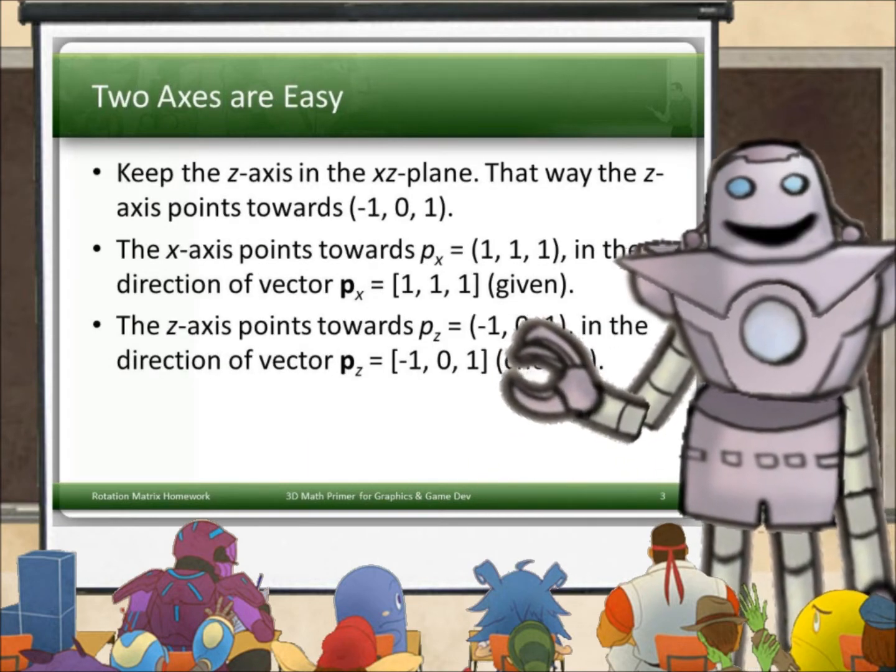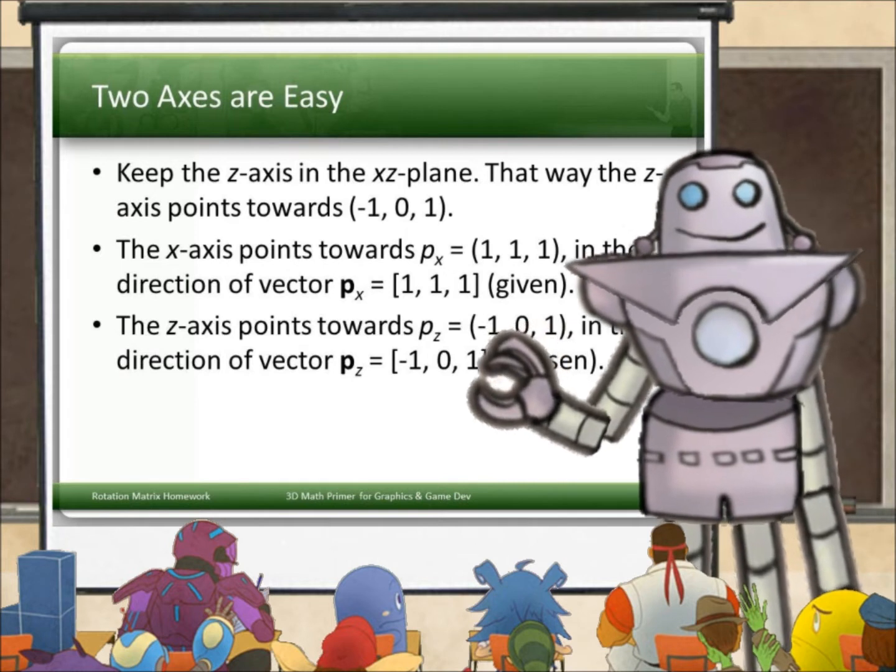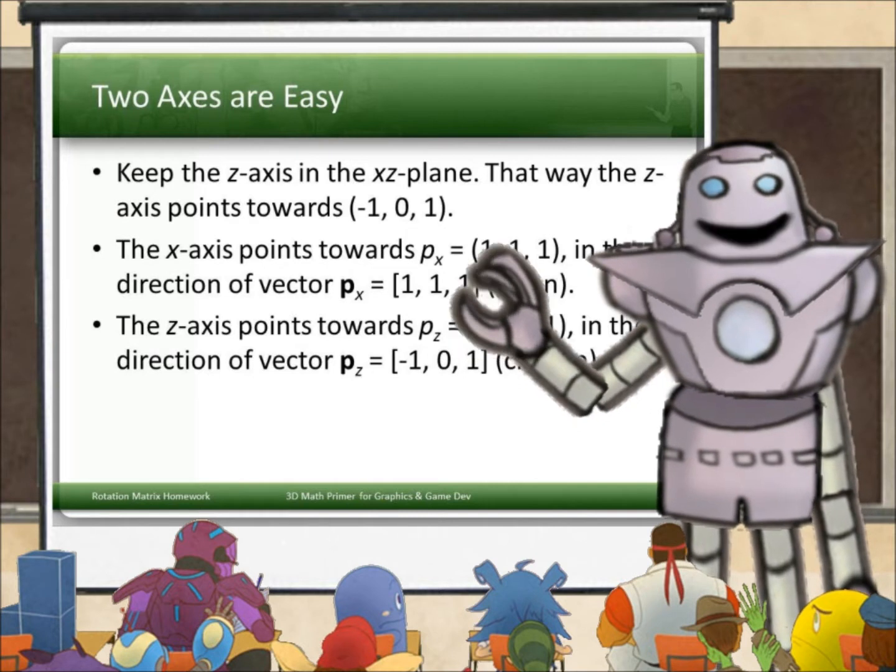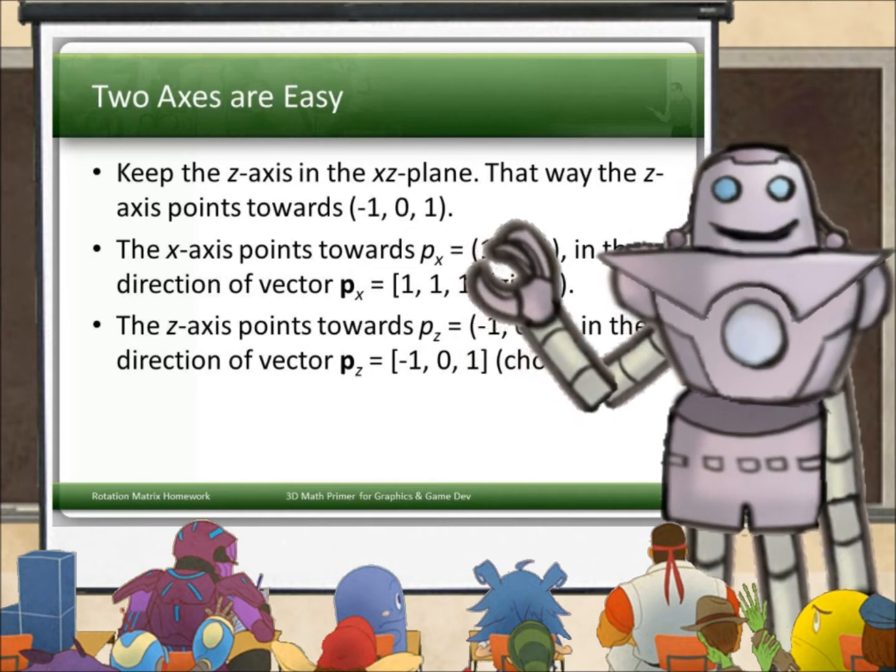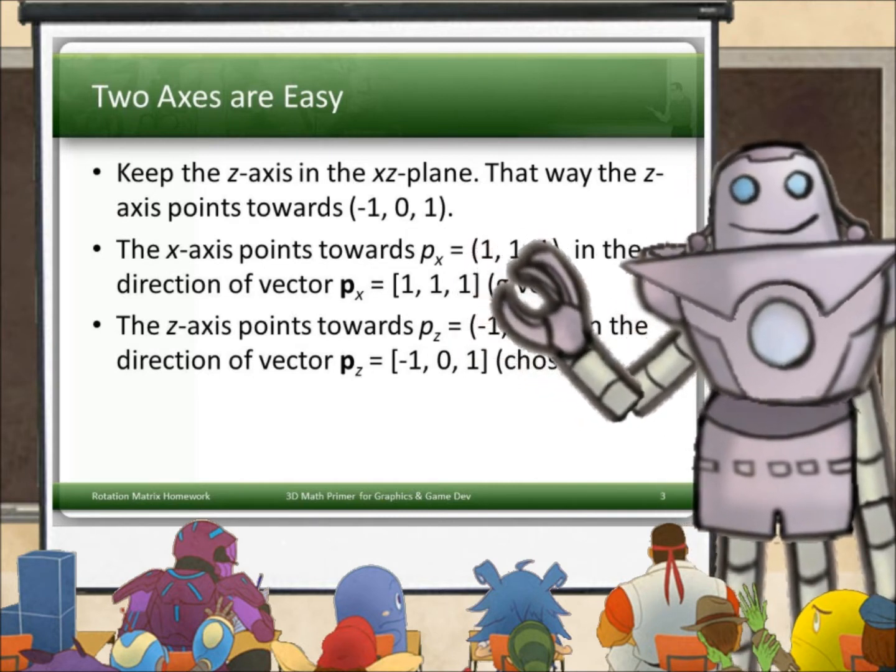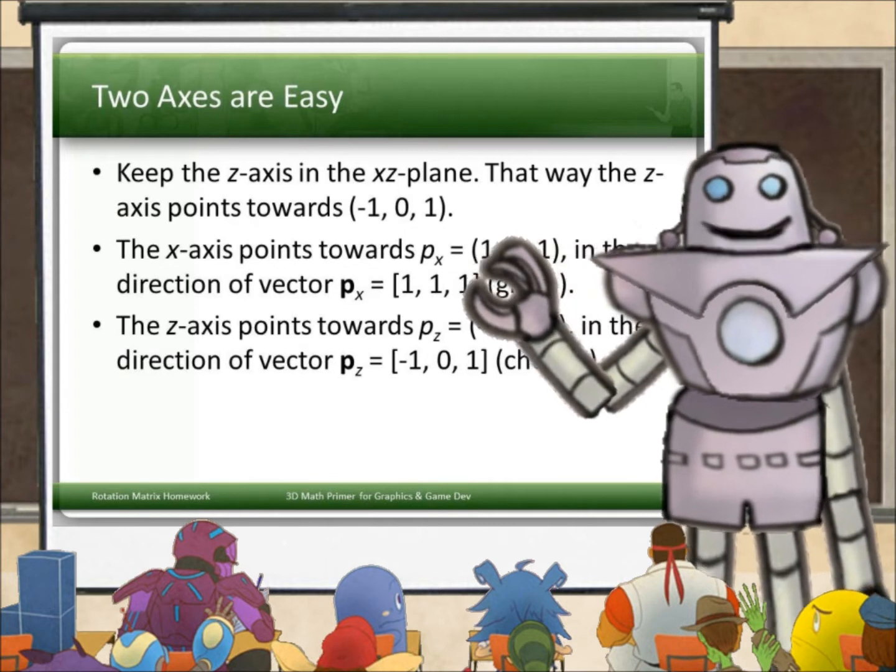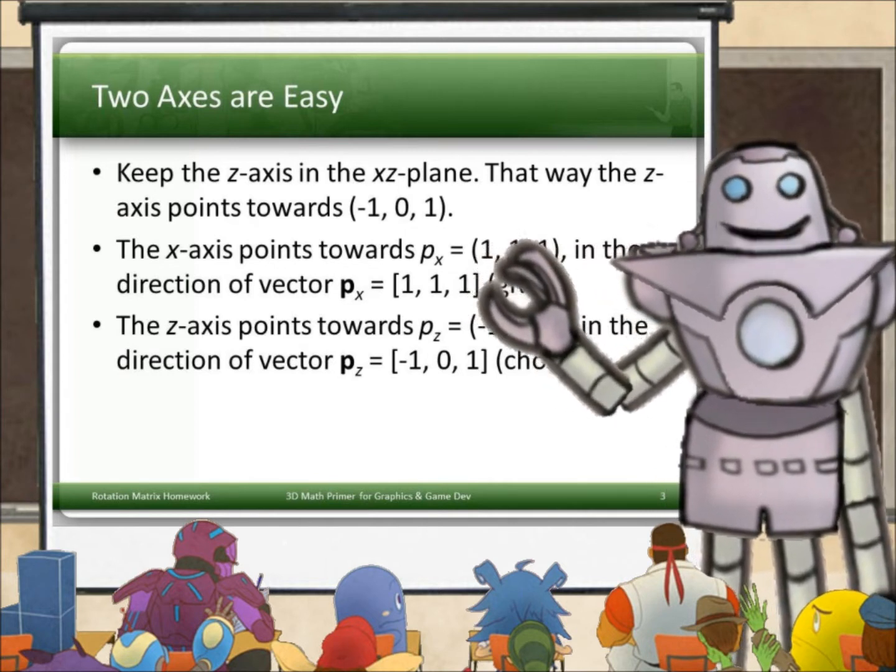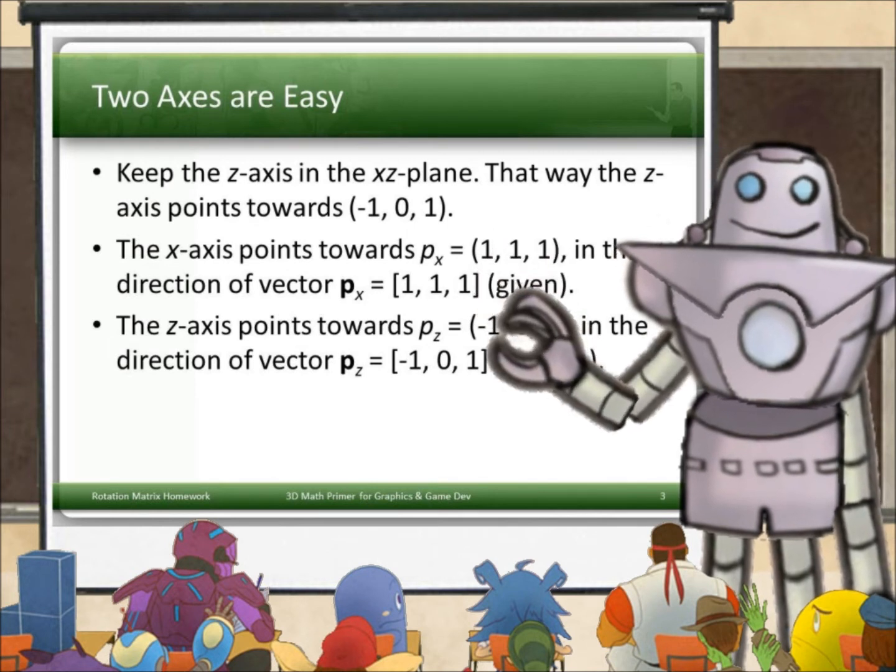In fact, finding information about two of the axes are easy. One is given. What I'm going to do is keep the z-axis in the old x-z plane. And that way, the z-axis will point towards the point (-1, 0, 1).